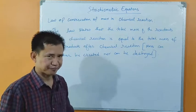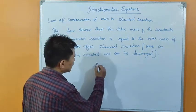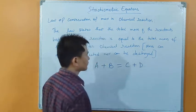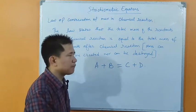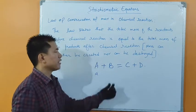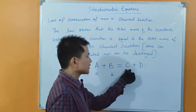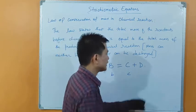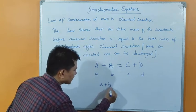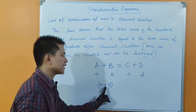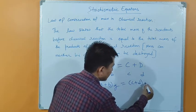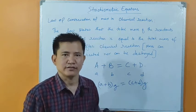Let me give an example to make you understand this better. Suppose substance A chemically reacts with substance B to produce substance C and substance D. Let us assume the mass of substance A is A gram, and the mass of substance B is B gram. Let us also assume the mass of substance C is C gram and the mass of substance D is D gram. According to the law, the total mass of the reactants — mass of substance A plus mass of substance B, that is A plus B gram — is equal to the total mass of the products, that is C plus D gram. Mass is not lost during chemical reaction.